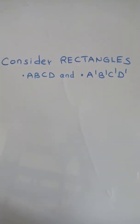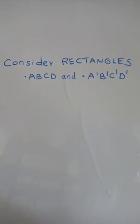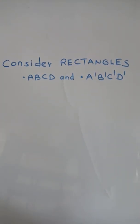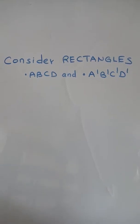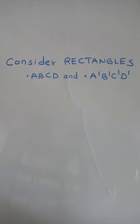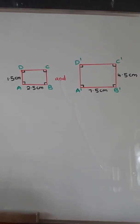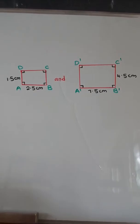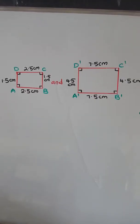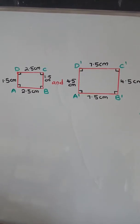Consider rectangles ABCD and A'B'C'D'. The opposite sides of rectangles are equal.